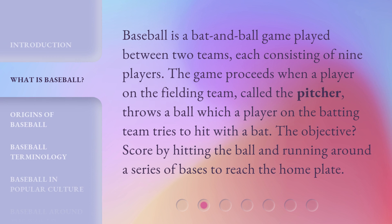Baseball is a bat and ball game played between two teams, each consisting of nine players. The game proceeds when a player on the fielding team, called the pitcher, throws a ball which a player on the batting team tries to hit with a bat. The objective? Score by hitting the ball and running around a series of bases to reach the home plate.